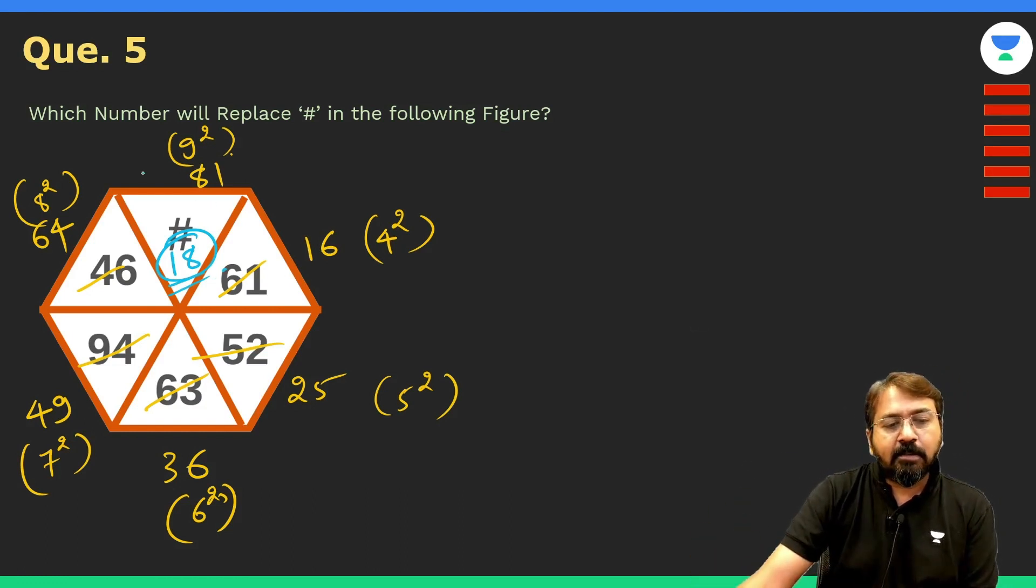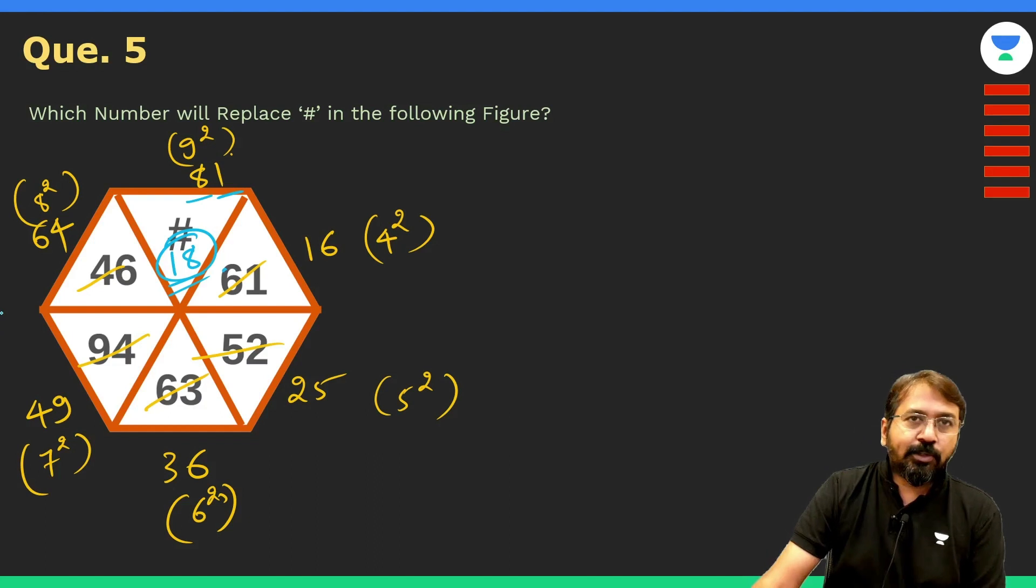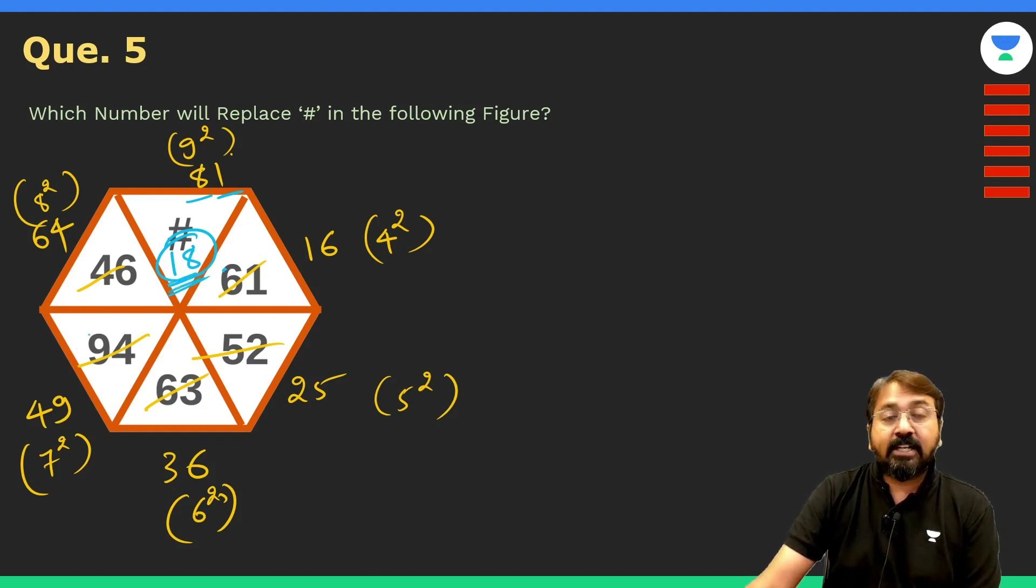Now you might be wondering it may be possible that this number may be 3 squared. So if I check 3 squared, it's 9, so I'll have to write 09. And all these numbers are of 2 digits, so that's how you can make out that it has to be some 2-digit number. So instead of 09 you can think that 18 is more appropriate.